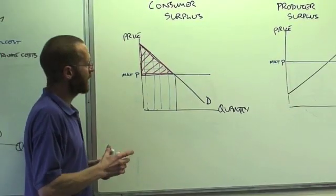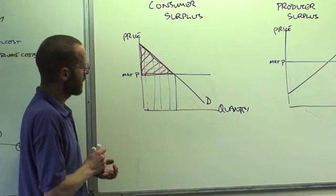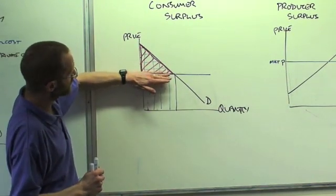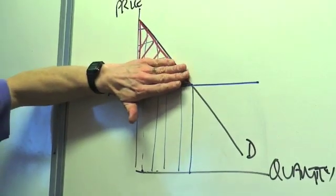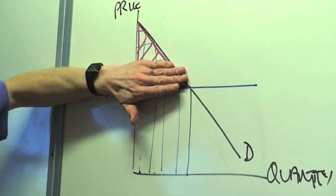Consumer surplus will change as the market price changes. Imagine the price going up. If the price goes up, this triangle becomes smaller. The consumer surplus goes down.